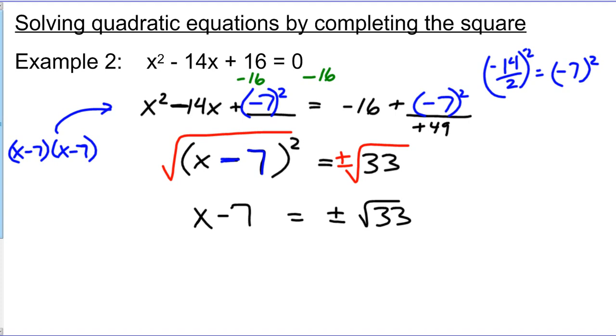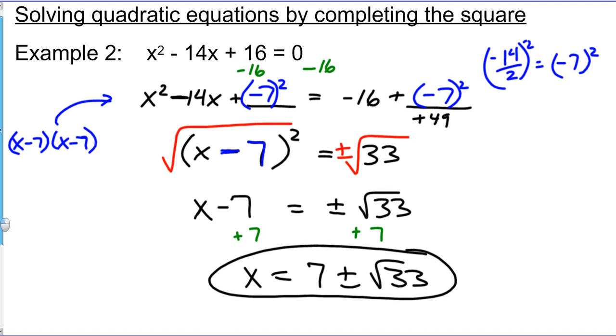And in this case, I'm just going to have to go ahead and add 7 to both sides. And you're not going to like this answer. I'm going to like it. x equals 7 plus or minus radical 33 is your answer in simplest radical form.